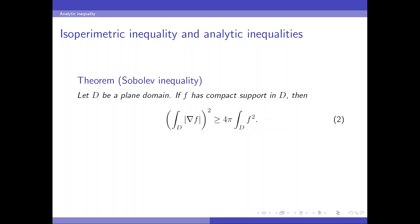Let D be a plane domain. If f has compact support in D, then the square of the L1 norm of its gradient is greater than or equal to 4 pi times the square of its L2 norm. We can show that the Sobolev inequality is equivalent to the isoperimetric inequality.